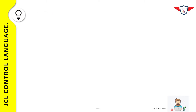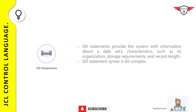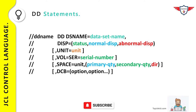DD statements (data definition statements) are used to define datasets used in your programs. They define the characteristics of a dataset — including record length, storage requirement, and organization. The syntax of DD statements can be complex because parameters can be coded in various combinations depending on whether the dataset is new or old, temporary or permanent, or cataloged or uncataloged.